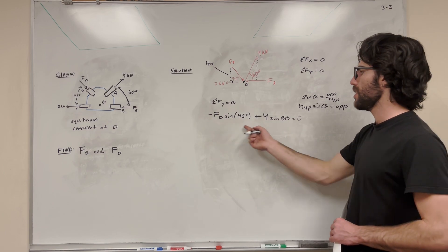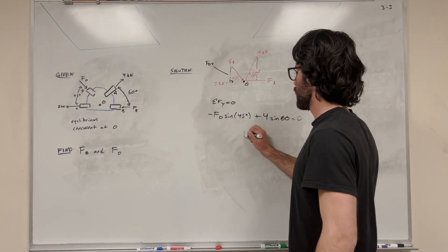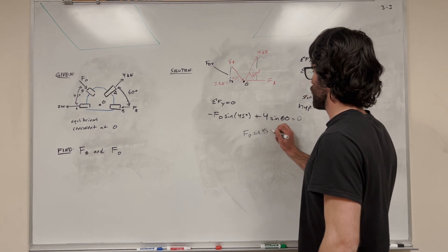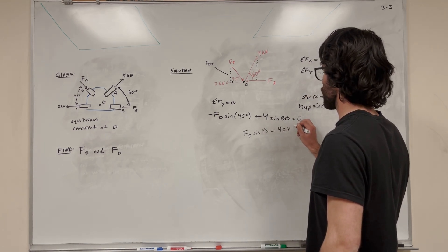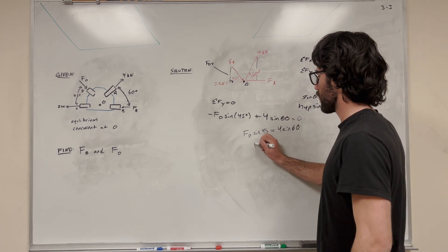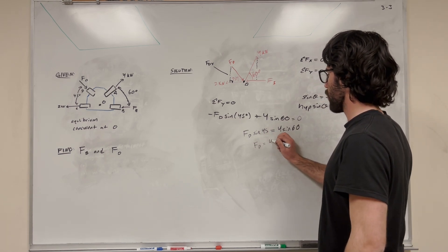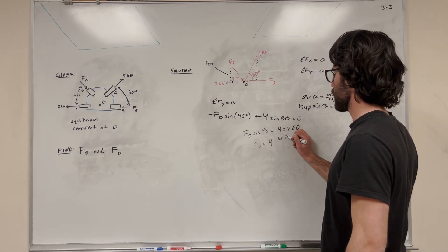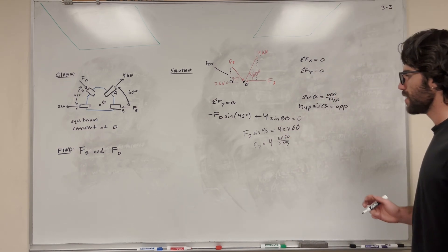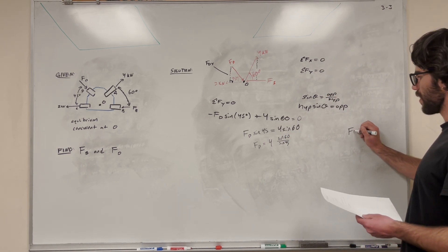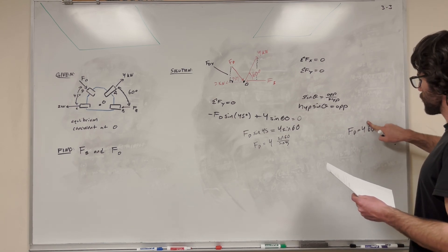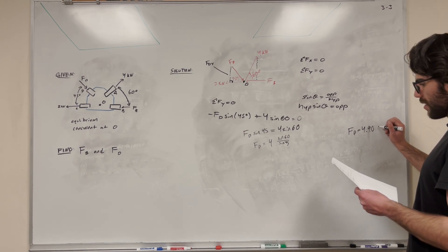Now we solve for force D. Subtracting and cancelling negatives, we get: force D times sine of 45 equals 4 times sine of 60. Dividing both sides, force D equals 4 times sine of 60 over sine of 45. If you do the math on this in your calculator, you get that force D is equal to 4.90 kilonewtons.